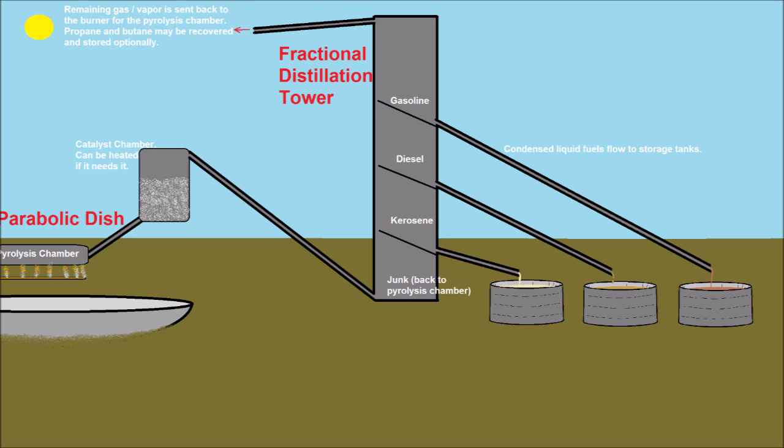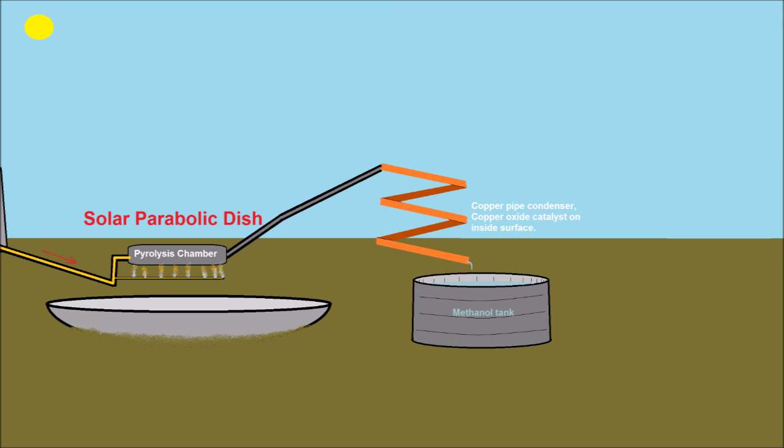The parts that do condense in the tower, like gasoline, diesel fuel, and kerosene, can be piped to storage tanks. If the desired fuel output is methanol, the pyrolysis chamber should run hot with some oxygen and nitrogen to make the normal syngas or wood gas. The syngas can be passed through a copper condenser with copper oxide on the surface to catalyze the formation of methanol, also called wood alcohol, because you can do this with wood gas.